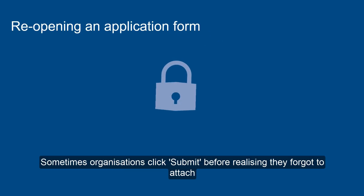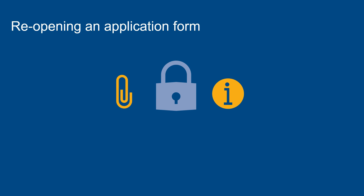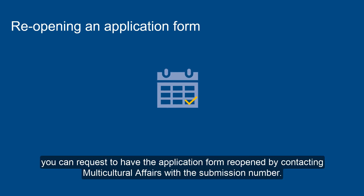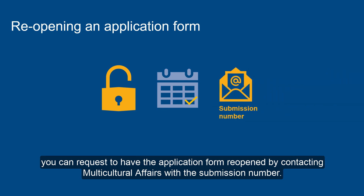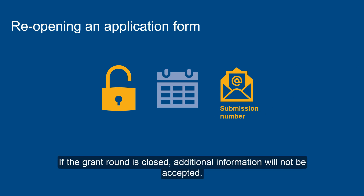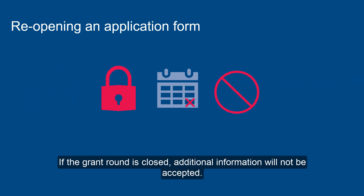Sometimes organisations click Submit before realising they forgot to attach a document or need to add more information to their application. If the grant round is still open, you can request to have the application form reopened by contacting Multicultural Affairs with the submission number. If the grant round is closed, additional information will not be accepted.